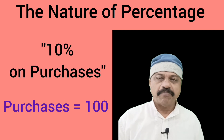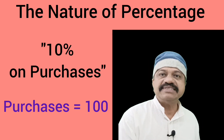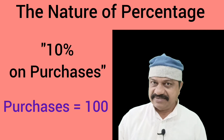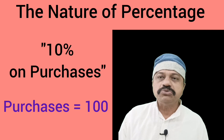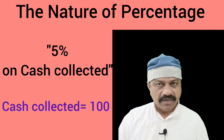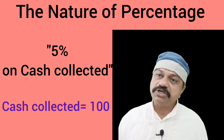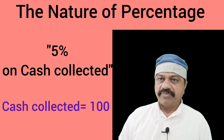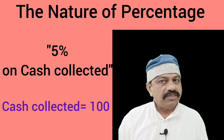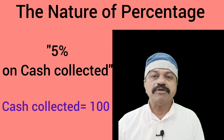Example 6: General manager is eligible for 10% commission on purchases. Here, 100 stands for purchases. That is, commission is equal to purchases multiplied by 10 divided by 100. Example 7: Agent will get 5% commission on cash collected. Here, 100 stands for cash collected. That is, commission is equal to cash collected multiplied by 5 divided by 100.